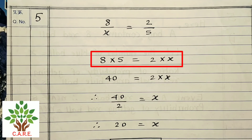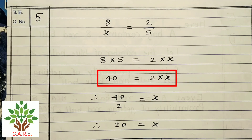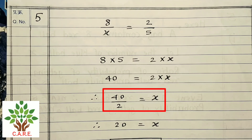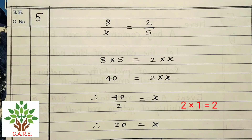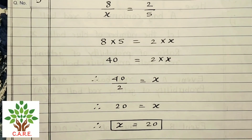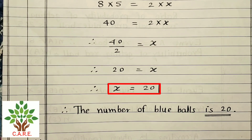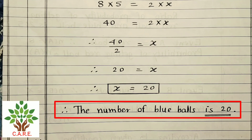From 8/x = 2/5: cross multiplying, 8 × 5 = 2 × x. Therefore 40 = 2x, so x = 40/2 = 20. Therefore x = 20. The number of blue balls is 20.